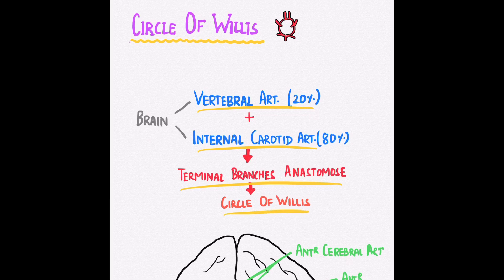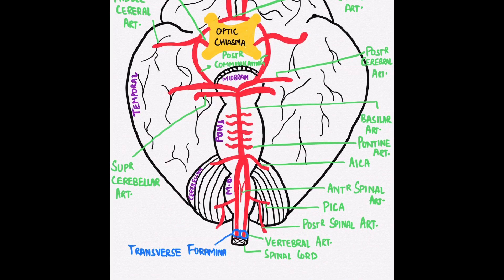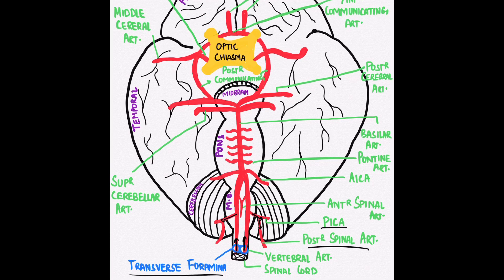Now let us see how both these arteries lead to formation of the Circle of Willis. The vertebral artery arises from the neck and through the transverse foramina of the cervical vertebrae enters the skull. This vertebral artery gives a branch posteriorly to the cerebellum known as the posterior inferior cerebellar artery, commonly called PICA. This PICA, along with the vertebral artery, gives off a branch posteriorly to the spinal cord known as the posterior spinal artery. Both vertebral arteries also give off an anterior branch to the spinal cord known as the anterior spinal artery.